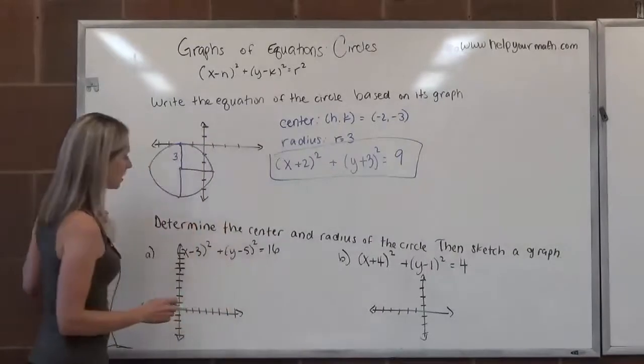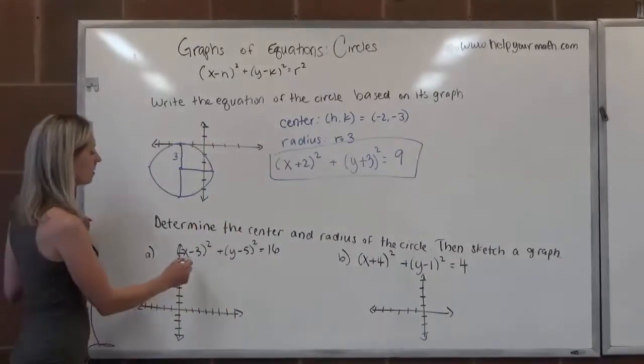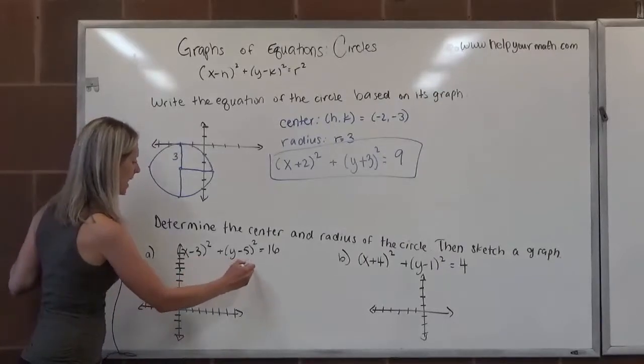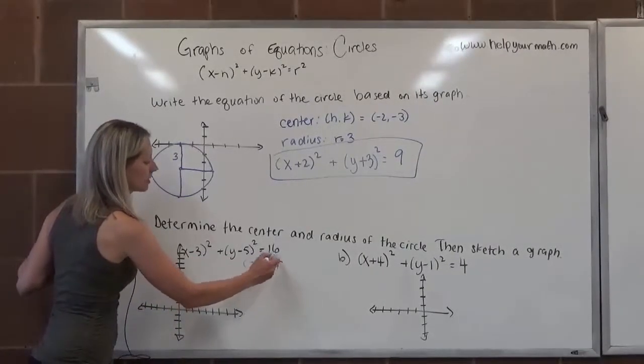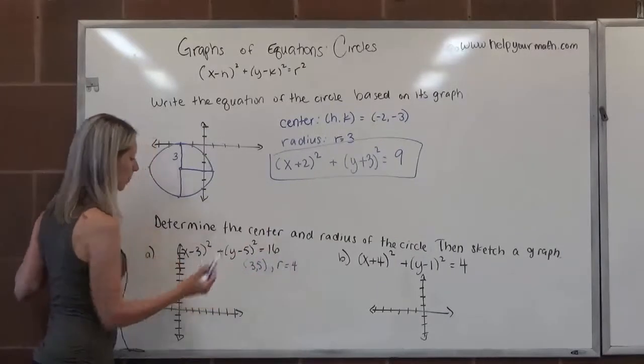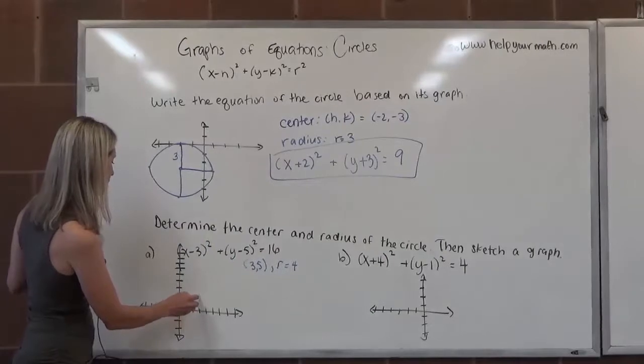So we're given (x-3)² + (y-5)² = 16. So the center is going to be found at (3, 5), and the radius is the square root of 16, which is 4. So 3, 5, 1, 2, 3, 1, 2, 3, 4, 5.